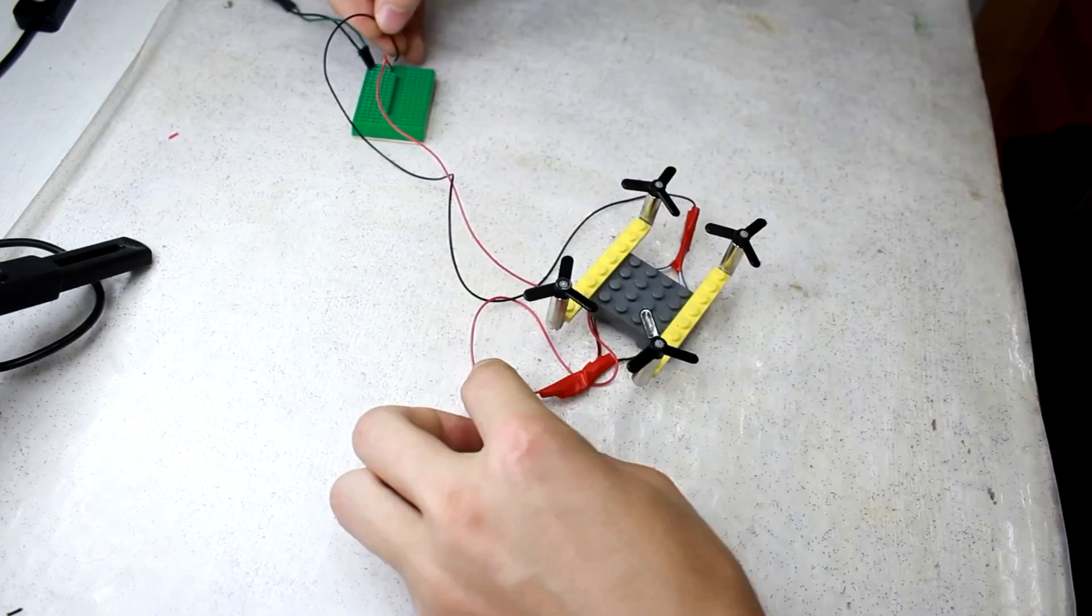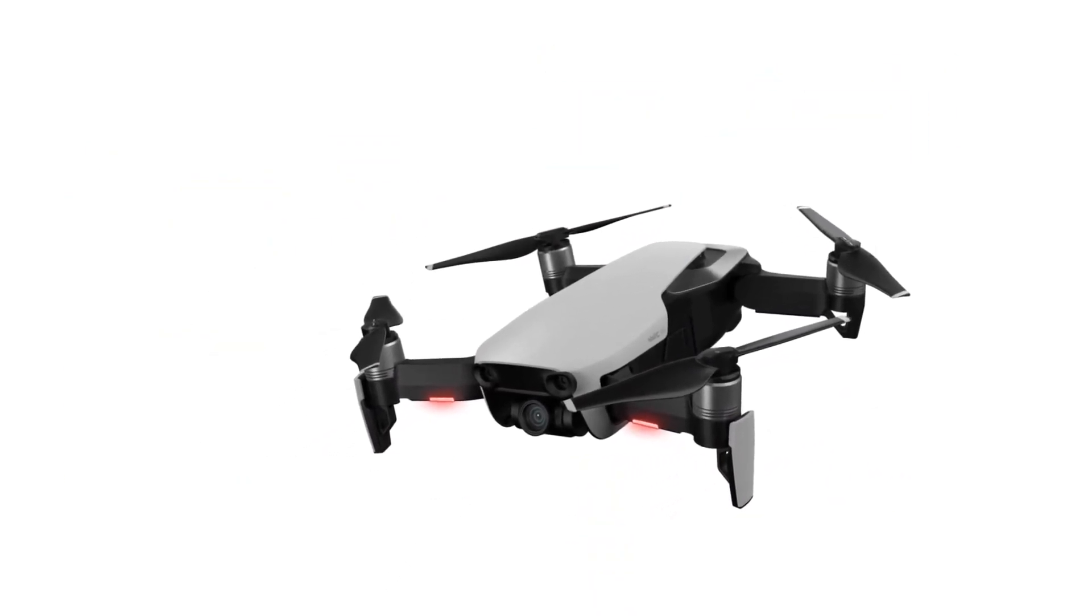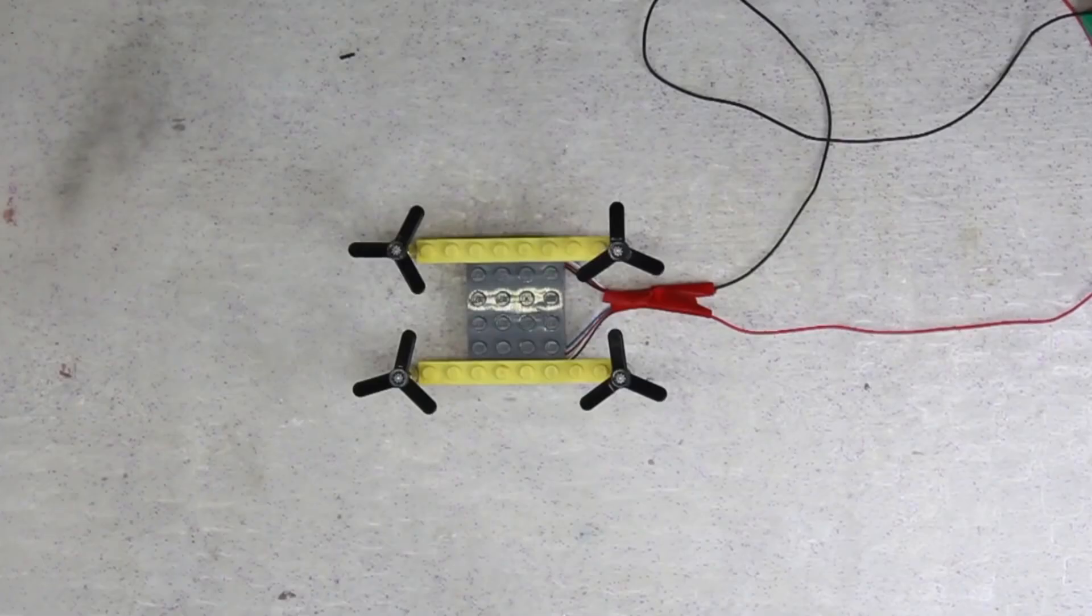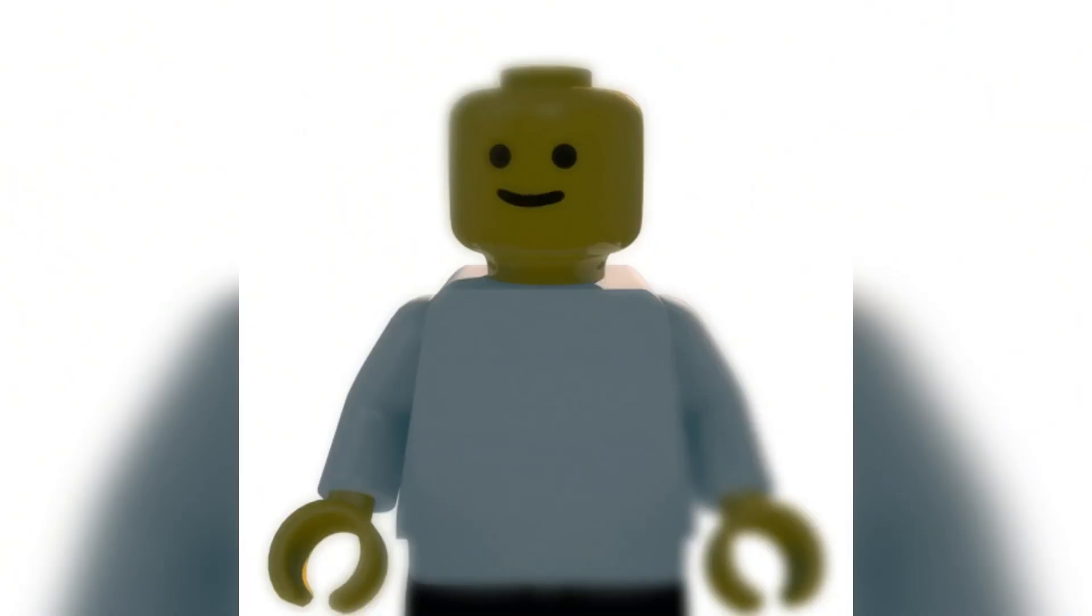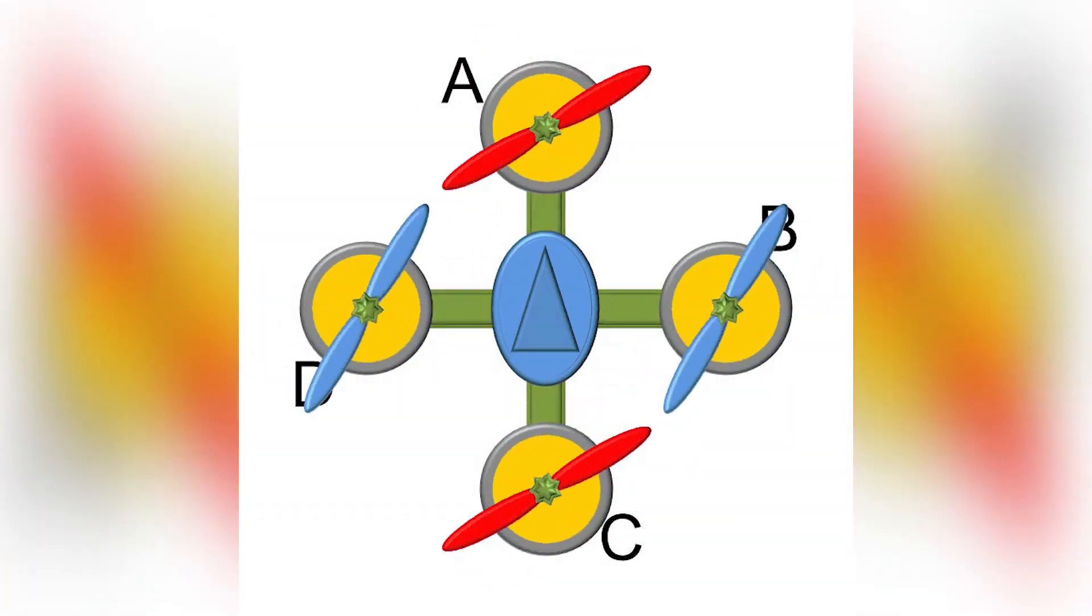But it's unstable. To force it to fly straight, electronics and sensors are needed to stabilize the flight. In addition, each propeller rotating in one direction creates an angular moment of force, which rotates the drone around its axis. To avoid this, pairs of motors need to rotate in different directions.